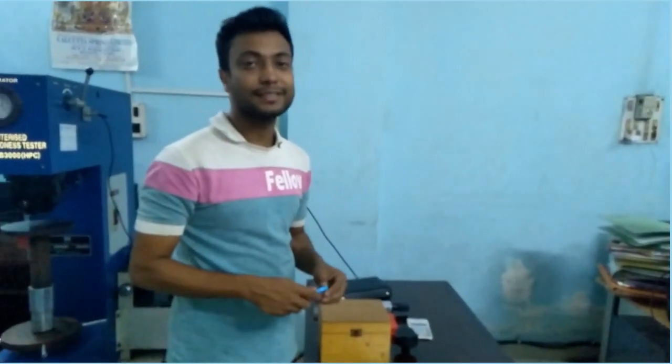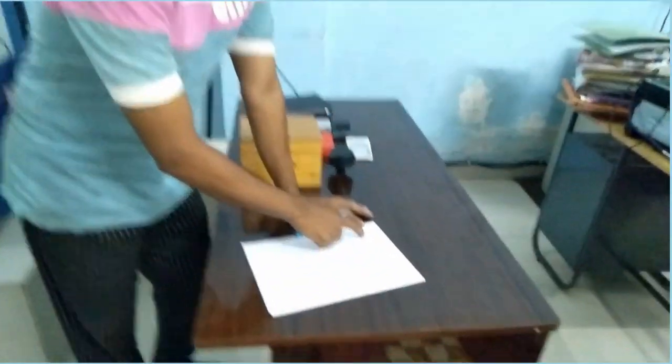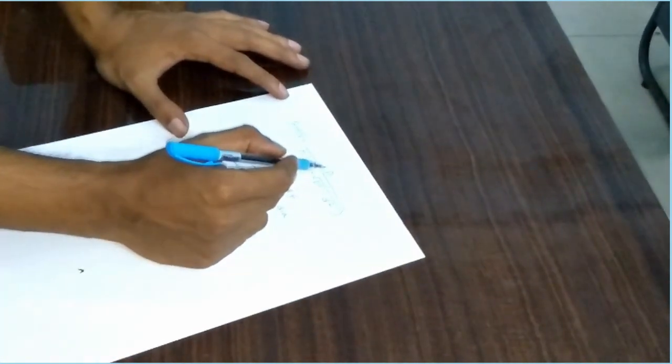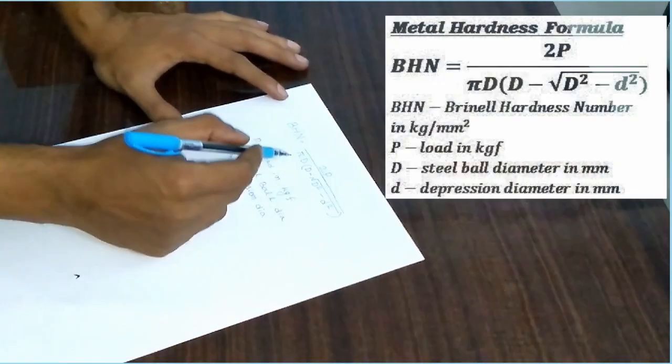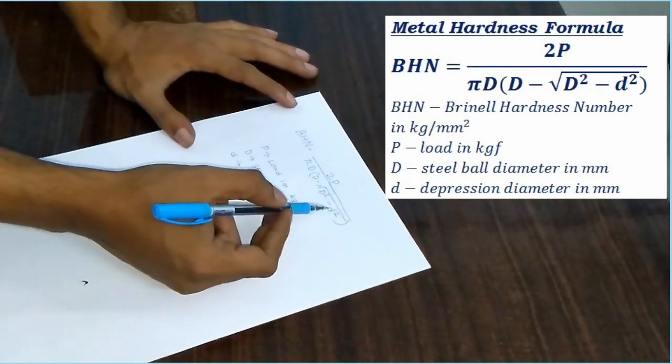For renal hardness measurement, we have a formula. This is renal hardness number. You can see it is 2P divided by πD(D minus √(D² - d²)), where...